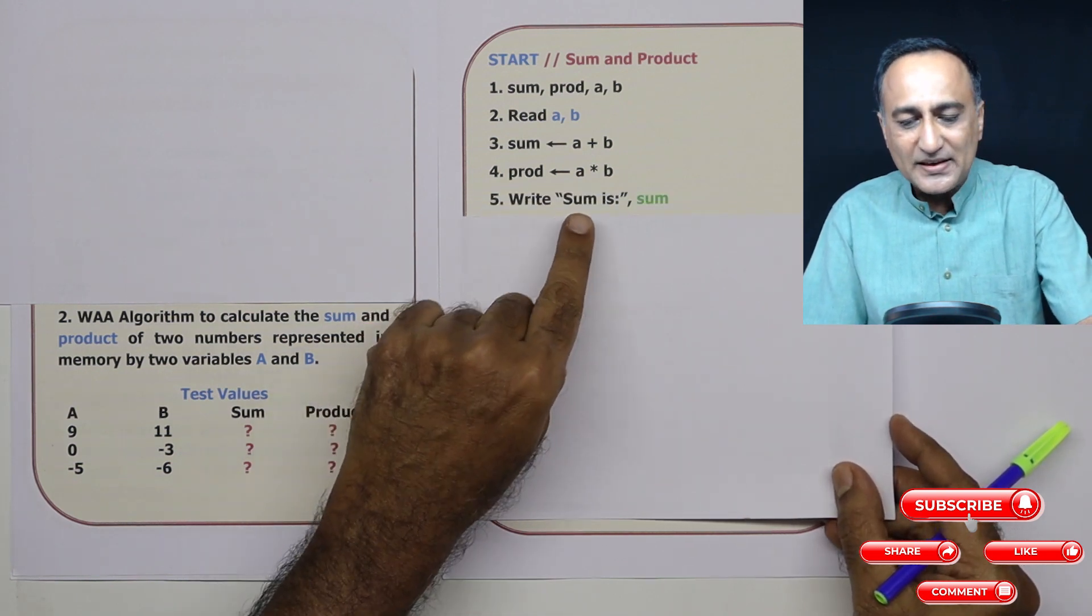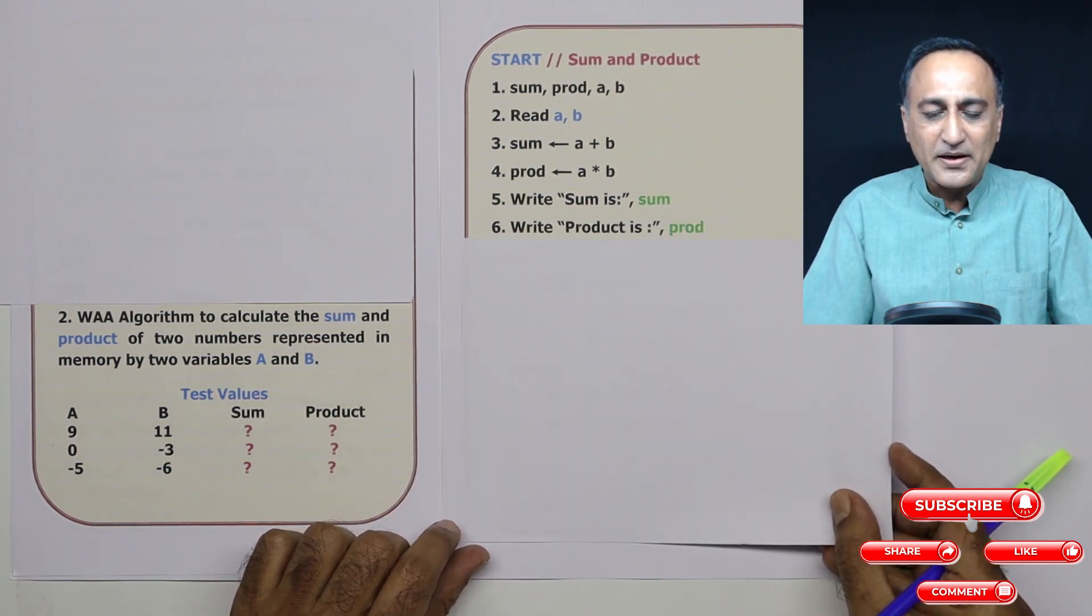Lastly, I print sum is sum. In step six, I print product is prod.